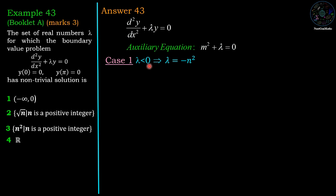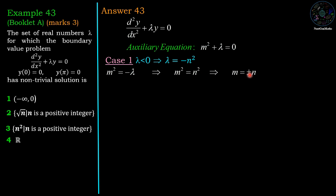Case 1: λ < 0, which implies λ = −n² where n is any real number. We rewrite the auxiliary equation as m² = −λ = n², therefore m = ±n. The corresponding solution of the differential equation is y = c₁eⁿˣ + c₂e⁻ⁿˣ.